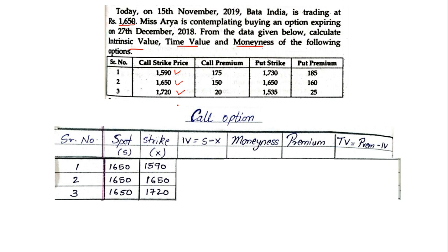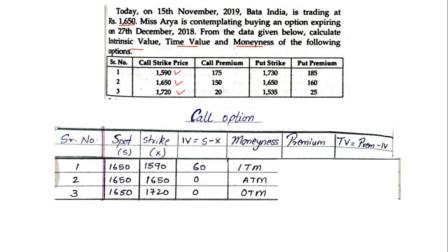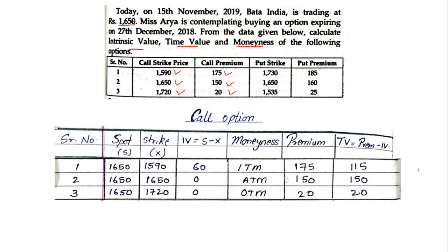For call option: if spot is more than strike it's positive; if equal, zero; if less, zero again. So 1650 minus 1590 gives a difference of 60; the next two are 0 and 0. Moneyness: ITM, ATM, and OTM. Premiums given are 175, 150, and 20. Time value: 175 minus 60 equals 115; 150 minus 0 equals 150; and 20 minus 0 equals 20. This is how you solve the sum on a call option basis.